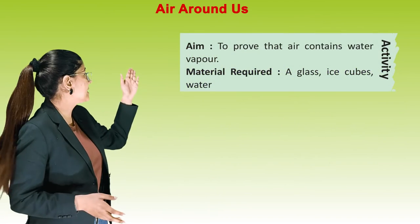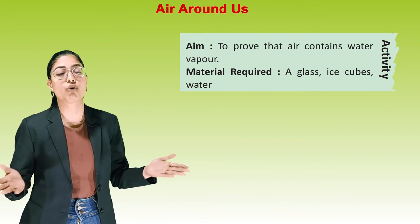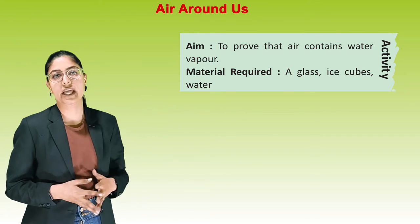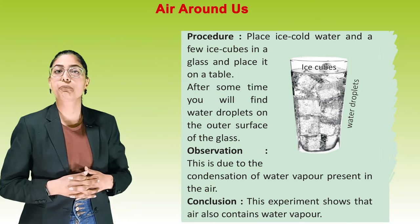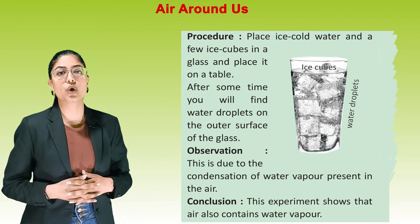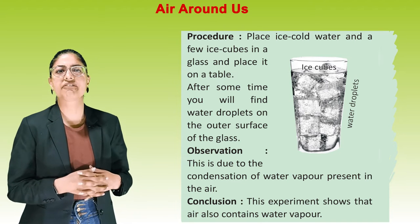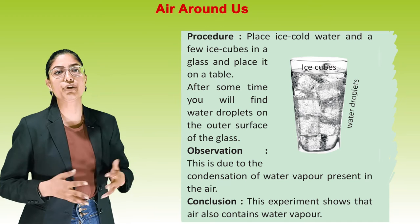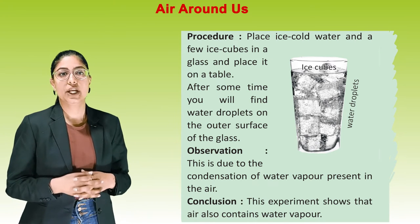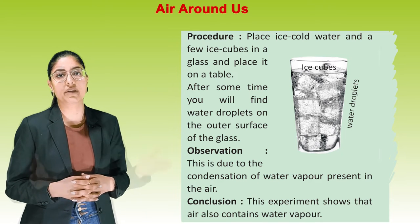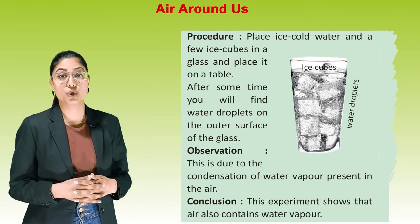Activity: to prove that air contains water vapor. Material required: a glass, ice cubes, water. Procedure: place ice cold water and a few ice cubes in a glass and place it on a table. After some time, you will find water droplets on the outer surface of the glass. Observation: this is due to the condensation of water vapor present in the air. Conclusion: this experiment shows that air contains water vapor.